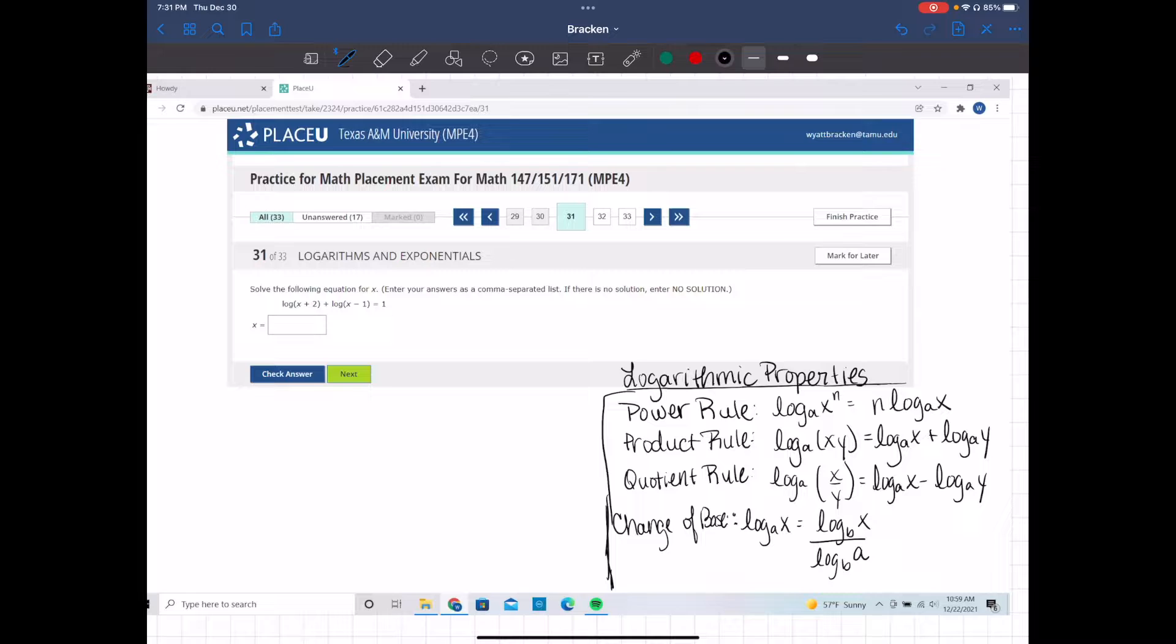You'll notice that down here I first have logarithmic properties. I have the power rule: log base A of x to the n equals n times log base A of x. The product rule: log base A of x times y equals log base A of x plus log base A of y.